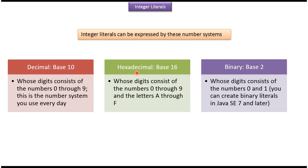The hexadecimal number system, whose digits consist of the numbers 0 through 9 and the letters A through F. The binary number system, whose digits consist of the numbers 0 and 1, and we can create binary literals in Java SE 7 and later.